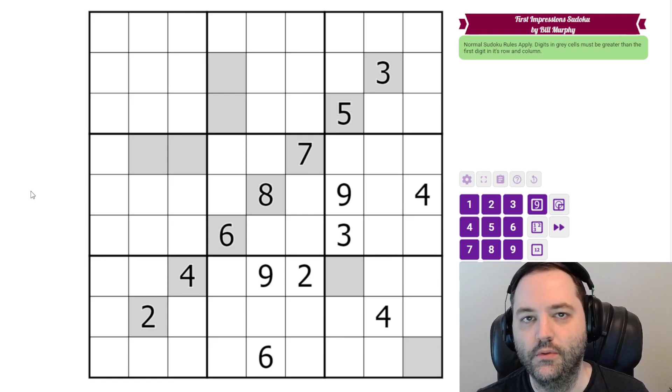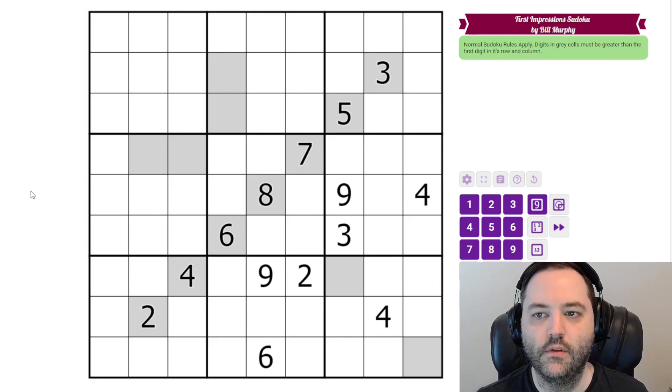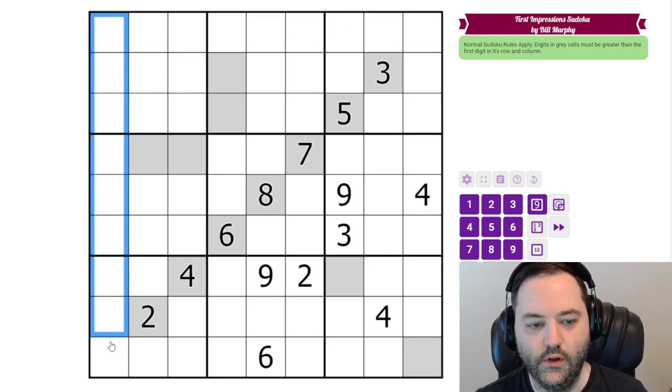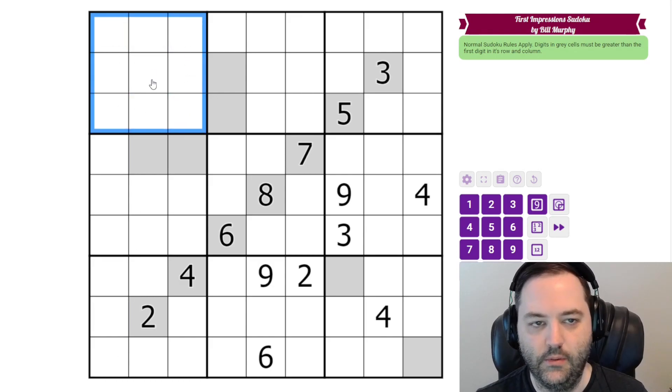Hi everyone, this is the gas walkthrough for February 24th. This is first impressions Sudoku by Bill Murphy and we have normal Sudoku rules 1 to 9 in each row, column, and 3 by 3 box.